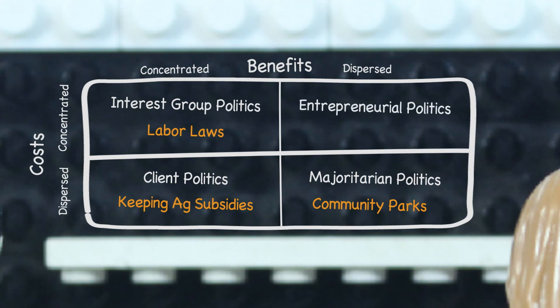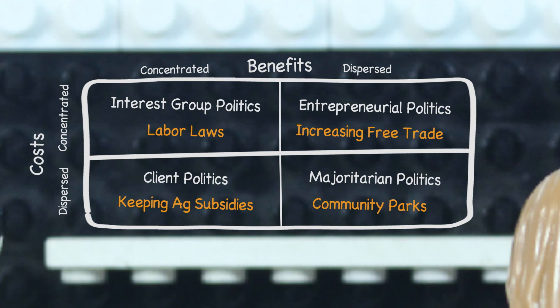When the benefits are dispersed and the costs are concentrated, we call this entrepreneurial politics, because to get things done, an entrepreneur needs to oppose the organized interest. One example is free trade — the majority of people benefit from lower prices, but that benefit is relatively small. At the same time, free trade comes with concentrated costs in certain industries, giving those industries incentives to mobilize and oppose increasing free trade.